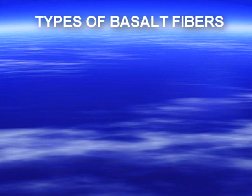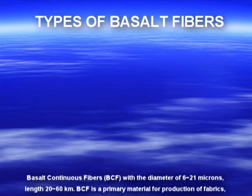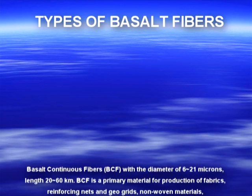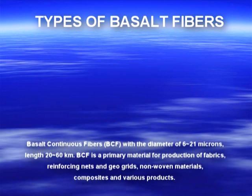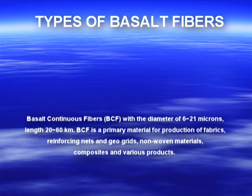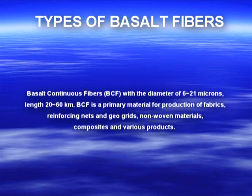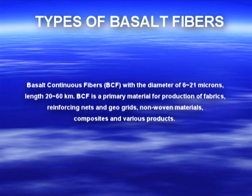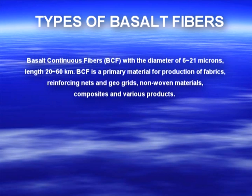Types of basalt fibers. Basalt continuous fibers have a diameter of 6–21 microns and lengths of 20–60 km. BCF is a primary material for production of fabrics, reinforcing nets and geo-grids, non-woven materials, composites and various products.